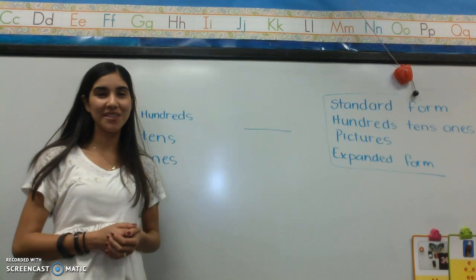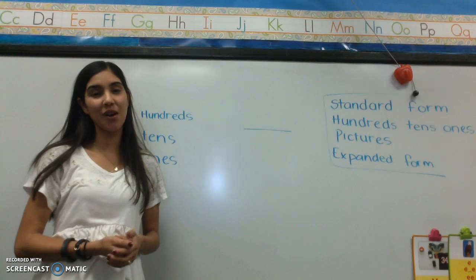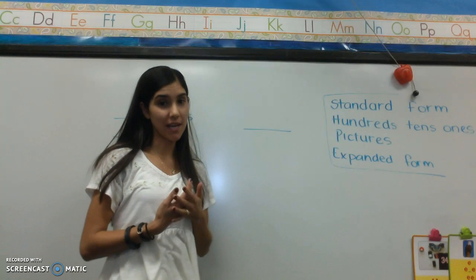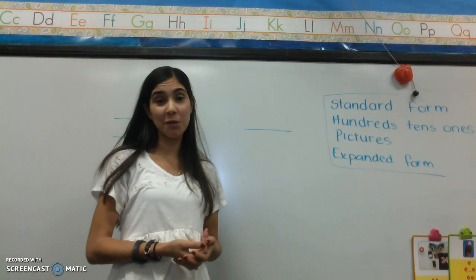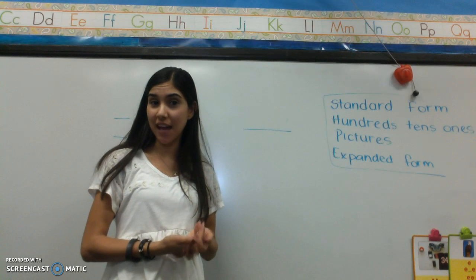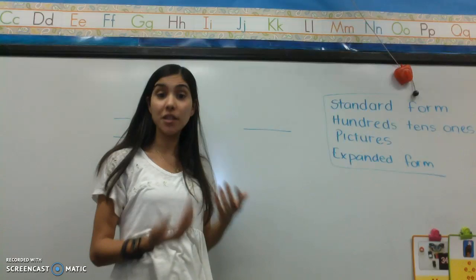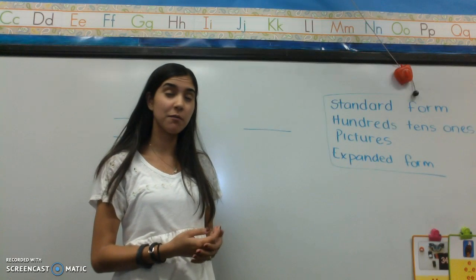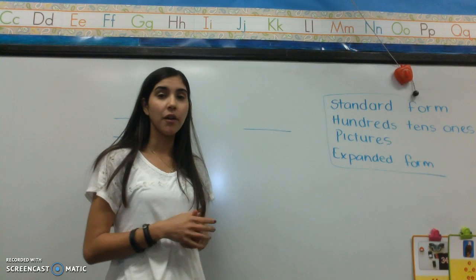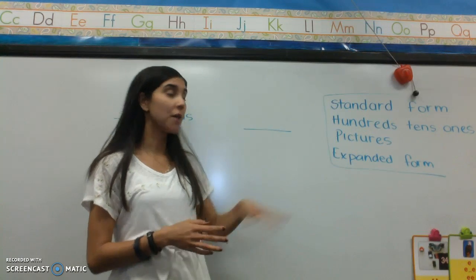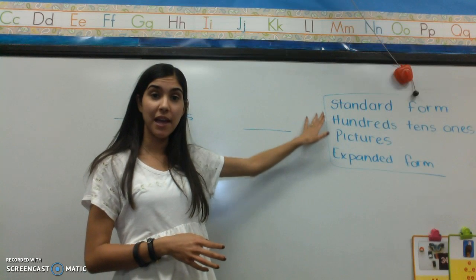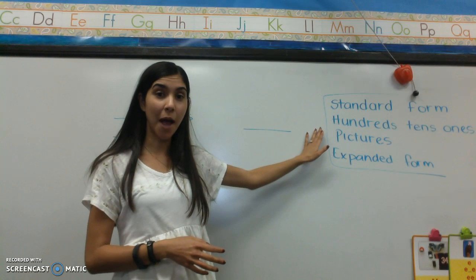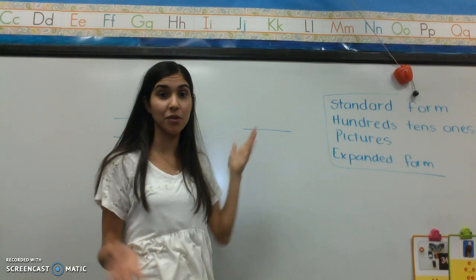Hi everyone. So today we are going to be talking about different ways to represent numbers. We're going to be doing math today and there are lots of different ways to represent numbers, but for today we're going to talk about four: standard form, hundreds, tens, and ones, pictures, and expanded form.